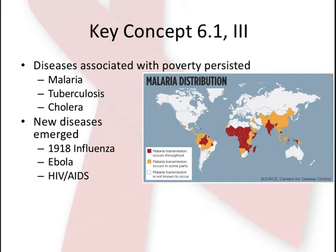New diseases also burst onto the scene. The influenza epidemic hit the world towards the end of World War I — largely a result of a new interconnected world. Called the Spanish flu, it took its toll on America, killing so many people that children sang about it in a jump rope rhyme: 'I had a little bird, his name was Enza, I opened the door, and influenza.' Ebola and HIV-AIDS began on the continent of Africa and quickly made their presence known worldwide, with HIV-AIDS disproportionately affecting the homosexual community.